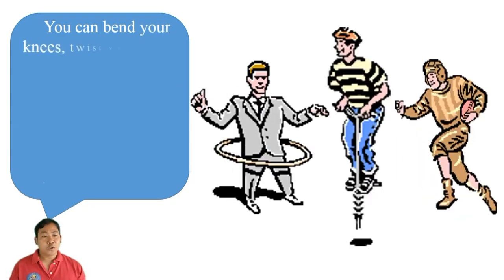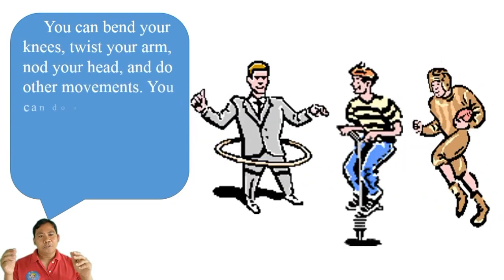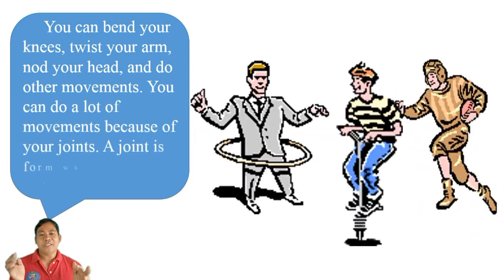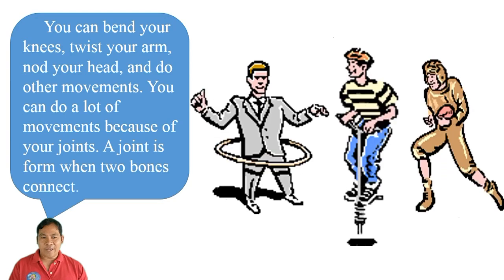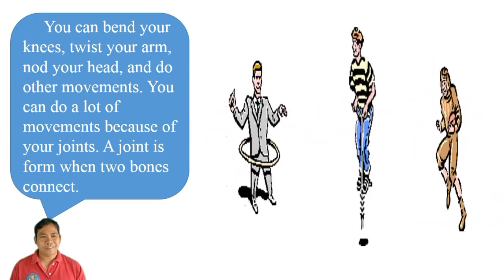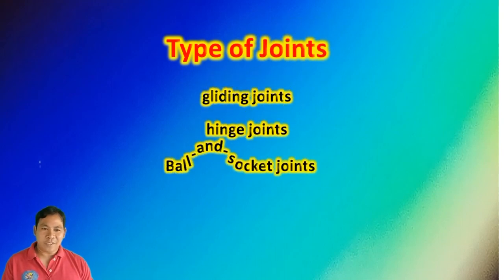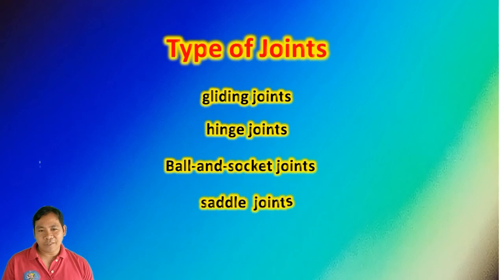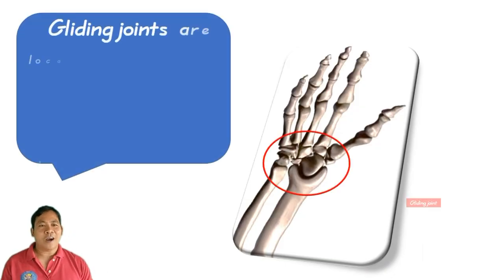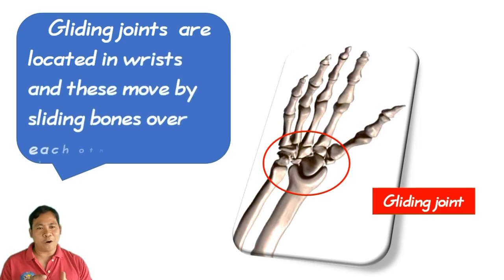You can bend your knees, twist your arm, nod your head, and do many other movements because of your joints. A joint is formed where two bones connect. Types of joints include: gliding joints, hinge joints, ball and socket joints, saddle joints, and pivot joints. Gliding joints are located in the wrists and move by sliding bones over each other.